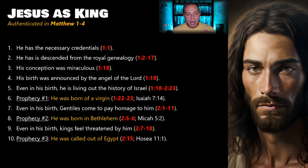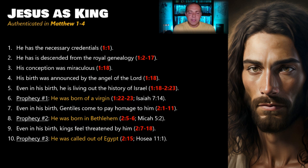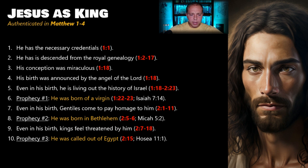Matthew begins to detail the narrative of Jesus's birth. His conception was miraculous, announced by the angel of the Lord, calling back to many instances in the Old Testament. Even in his birth, Jesus is living out the history of Israel — just like kings throughout the Old Testament lived out Israel's history, such as David, who constantly went through situations that called back to other incidents in Israel's story. Jesus, even in his birth, follows in the footsteps of those other kings. He has this miraculous conception clearly an act of God, a virgin giving birth to a son, announced ahead of time like a royal proclamation.